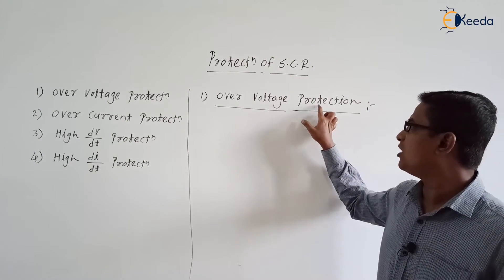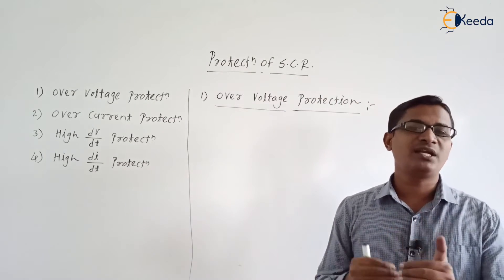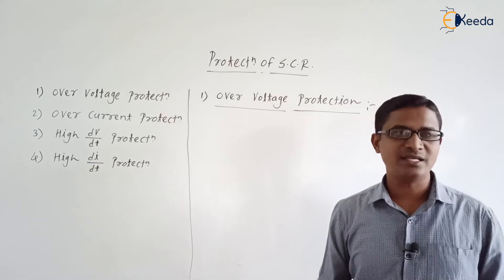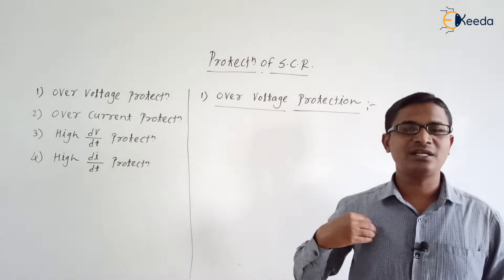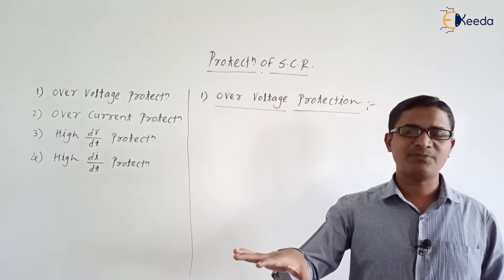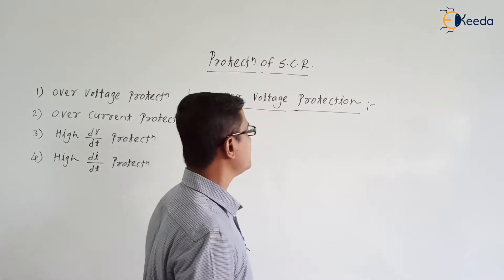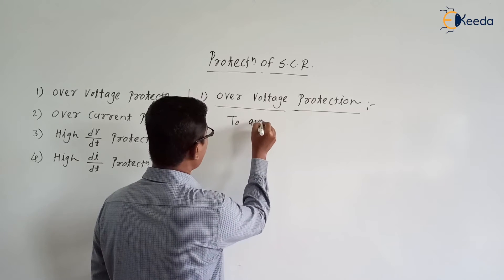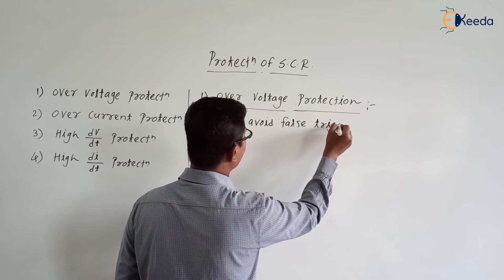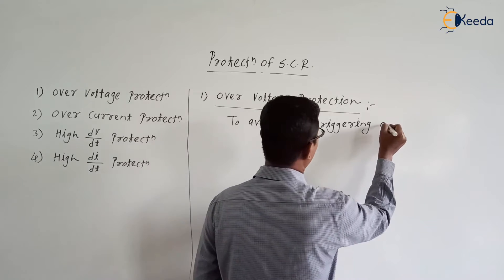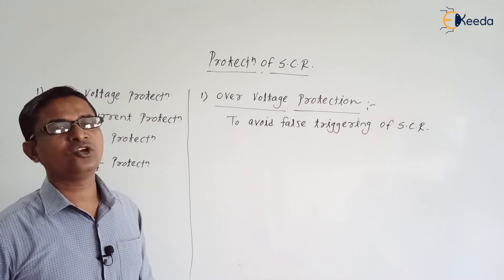Suppose if we do not protect the SCR against over voltage, then there is a possibility that the SCR may get triggered — falsely triggered. Falsely triggered means we are not interested in turning on the SCR at that particular instant, but due to over voltage, the SCR may get triggered. So, in order to avoid false triggering of SCR, we need to protect it against over voltage.